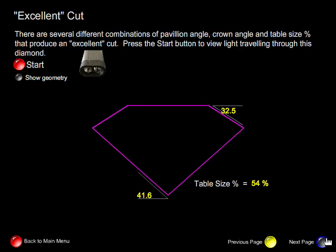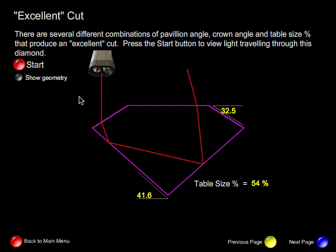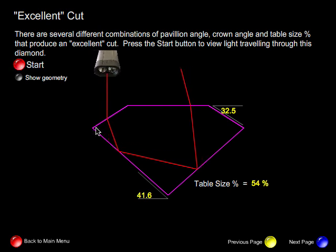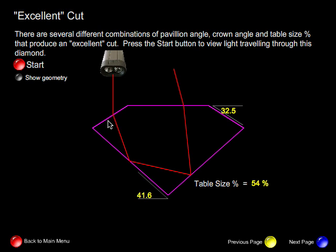Now there are several different combinations of pavilion angle, crown angle, and table size percentage that produce an excellent cut. Let's take a look at this particular diamond. Once again, these proportions have changed, and yet they produce the same type of effect.